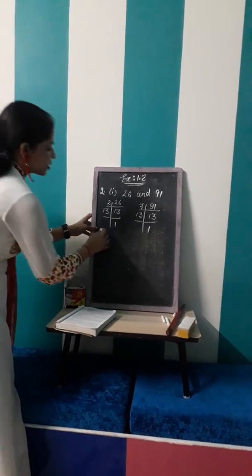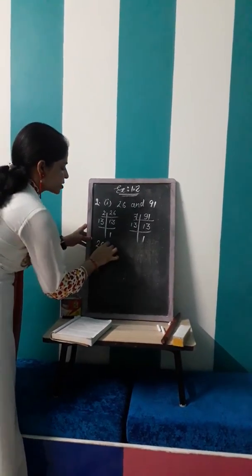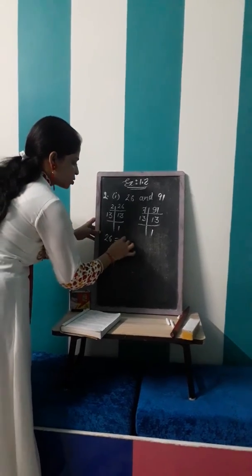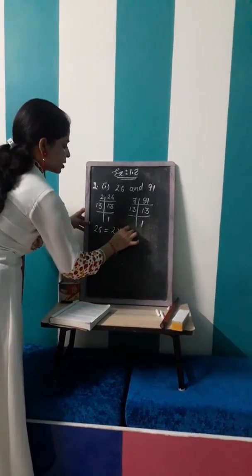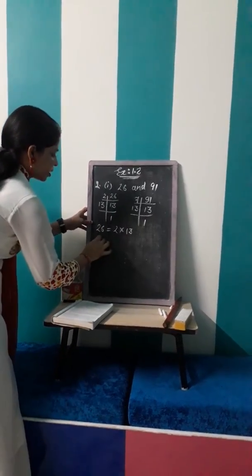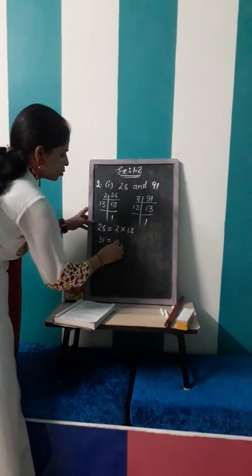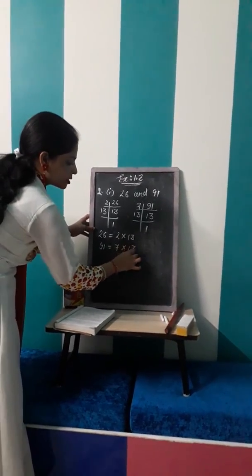Now we will write the prime factorization of both. 26 ki prime factorization, we have 2 multiply by 13. And similarly, 91 will equal to 7 multiplied by 13.